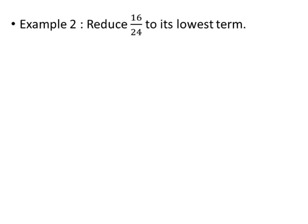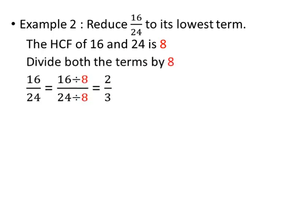Example 2: Reduce 16 by 24 to its lowest term. First, find the highest common factor of 16 and 24. The HCF of 16 and 24 is 8. So we divide both the numerator 16 and the denominator 24 by 8. Thus, 16 divided by 8 upon 24 divided by 8 equals 2 upon 3. Since we divided by the highest common factor, the lowest term of 16 by 24 is 2 by 3.